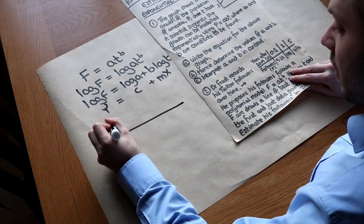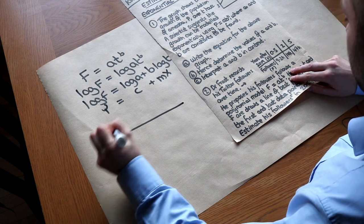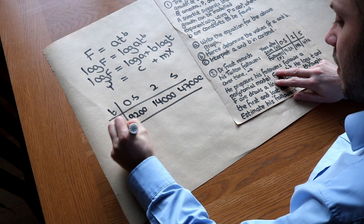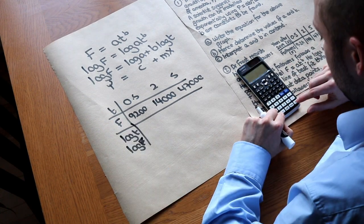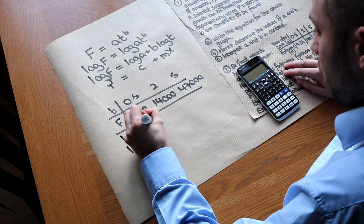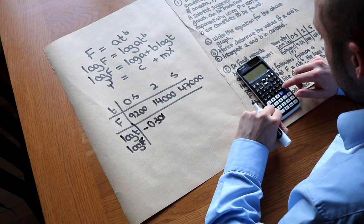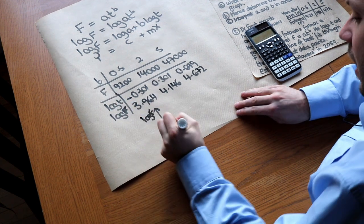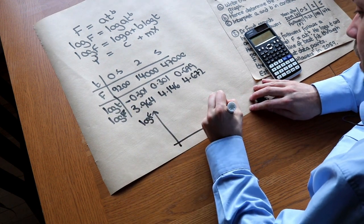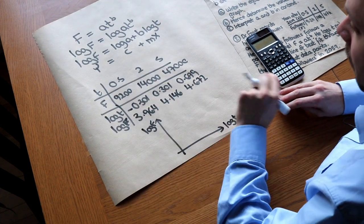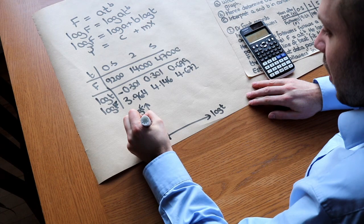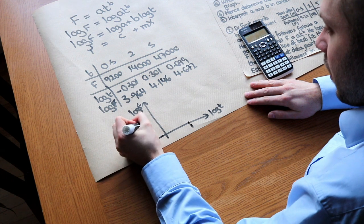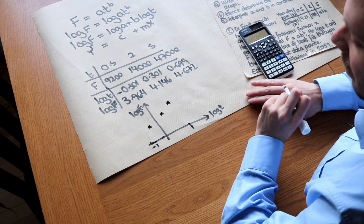So we draw a table with T and F, logging both to get log T and log F. For example, log of 0.5 is minus 0.301. When we plot log F against log T, we expect the points to roughly follow a straight line of best fit, with points approximately at (−0.301, ...), (0, ...), and (0.699, ...) — and indeed they do roughly follow a straight line.